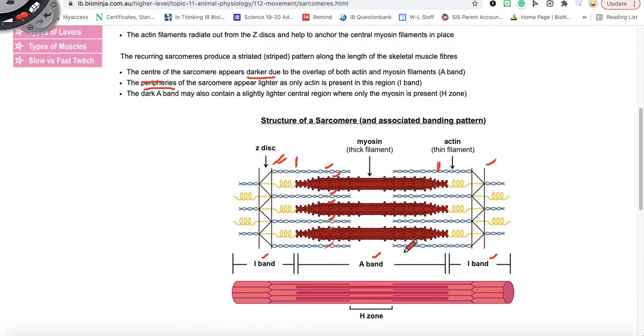And then when the sarcomere is not contracted there is a region within the A band called the H zone. This is the lighter central region within the A band because if you think about it, when this muscle is relaxed and not contracted then you're only going to find myosin in this central region which we call the H zone.